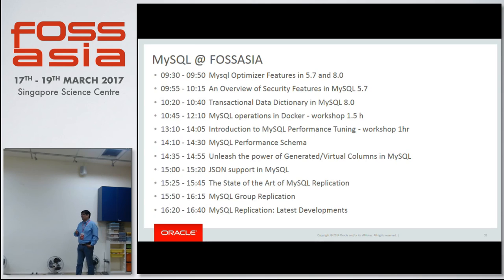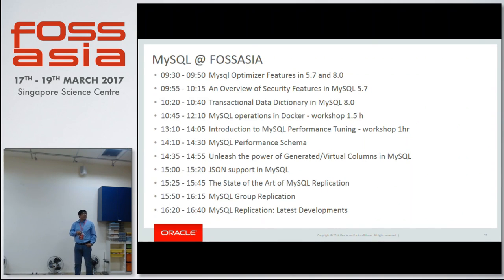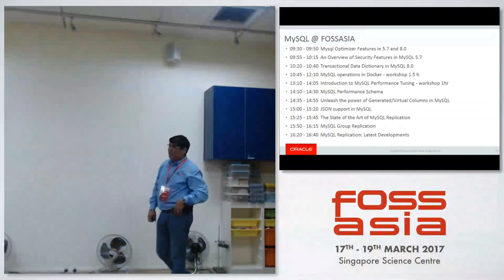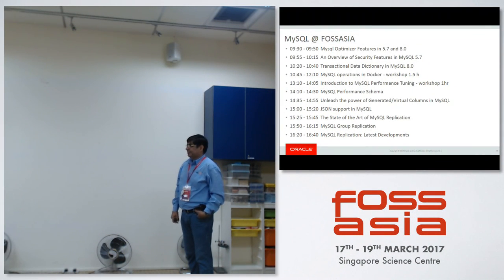Generated virtual columns — a lot of the new features are based on JSON indexing using virtual columns that we create. You can read a virtual column and do indexing on it. And there is a lot on replication — many people are interested in what is new in group replication and the latest developments. Here is how you do a setup, what is there in group replication, what is planned, and what has currently been completed. That's all from me. I've run a little over time. Any questions? Thank you so much.